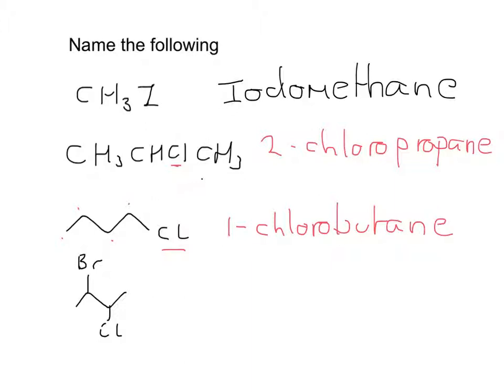And finally, the fourth one, again I've got four carbons, so he's going to be butane from the butane family. However, I've now got a bromine and a chlorine. So it's going to be 2-bromo, 3-chlorobutane. Well done.